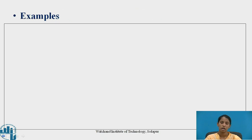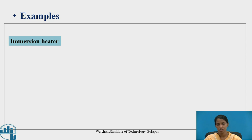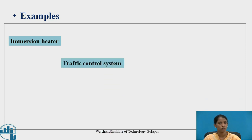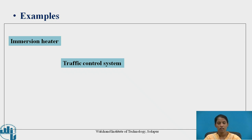Let's see the examples of an open loop control system. The first example is an immersion heater. The output of the heater is the heat generated, but there is no mechanism to measure the temperature or to switch off the heater when the maximum temperature is reached. The next example is a traffic control system, where the signal changes after a fixed interval of time without taking into account the density of traffic waiting on the road.